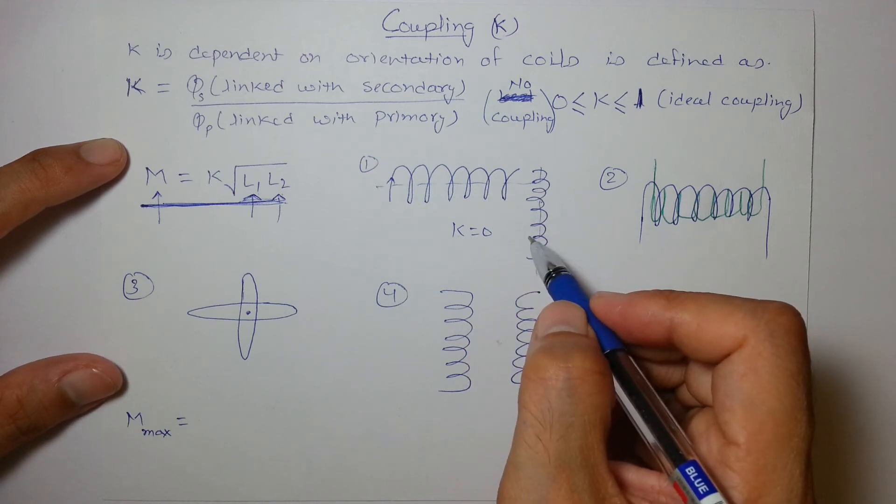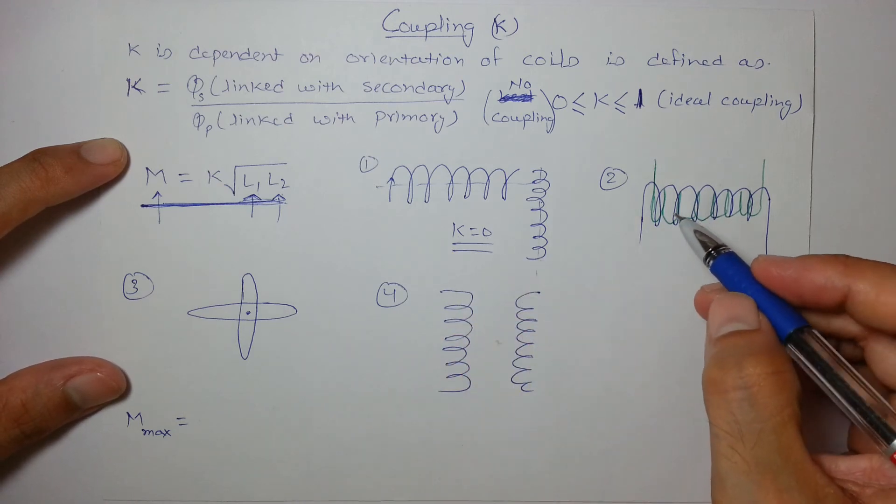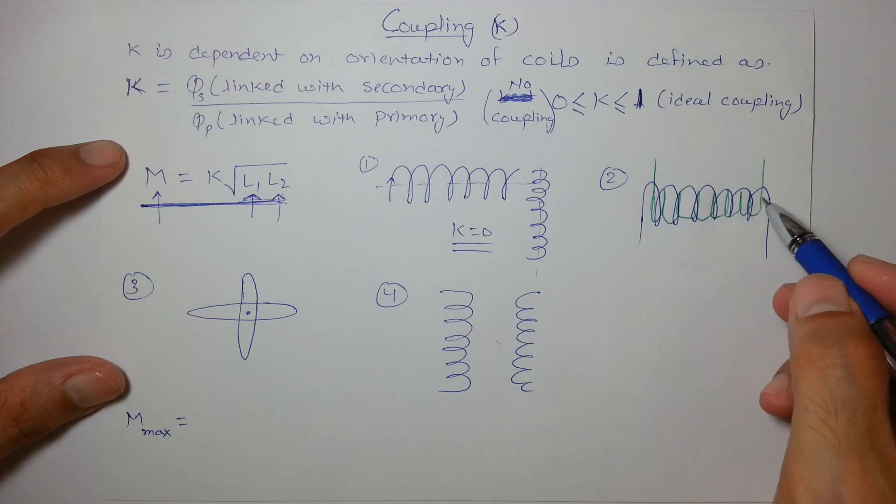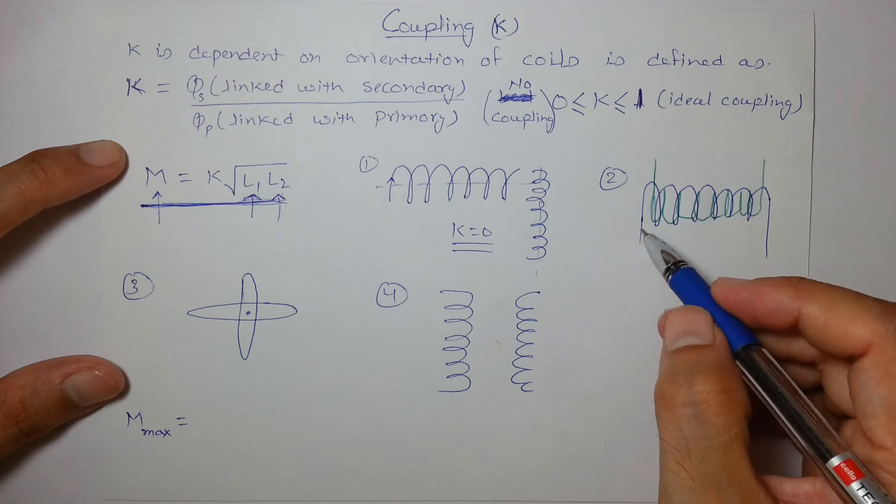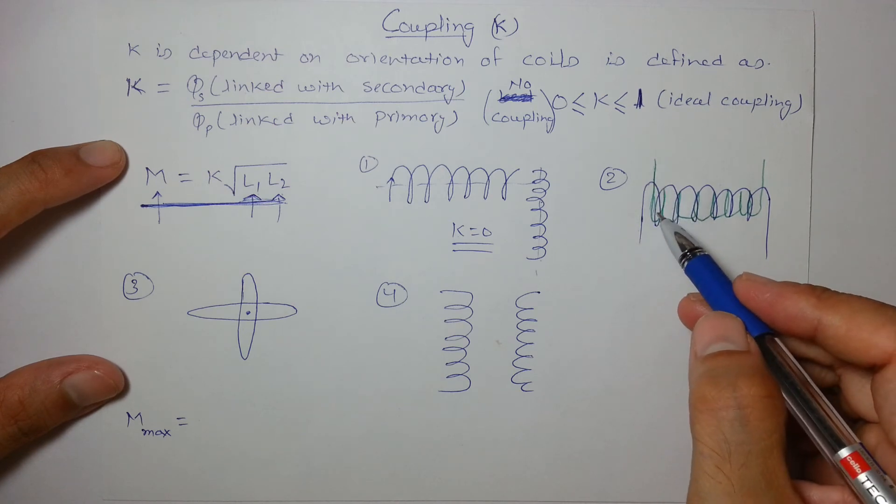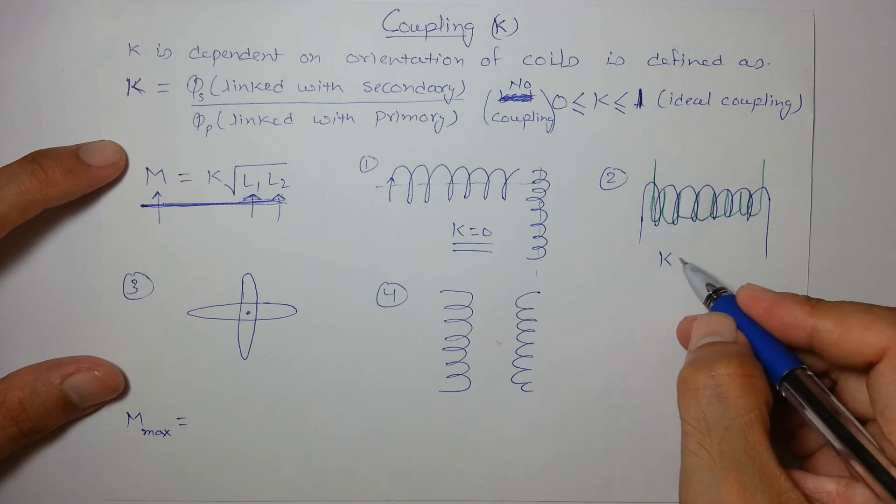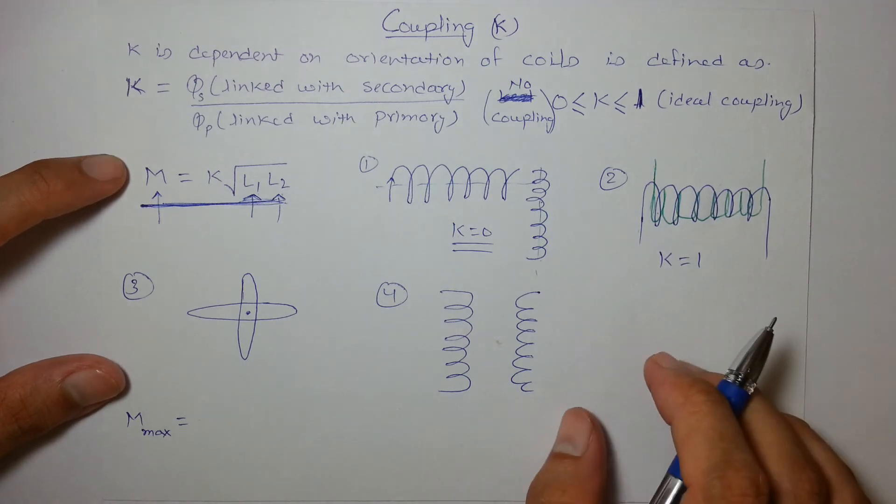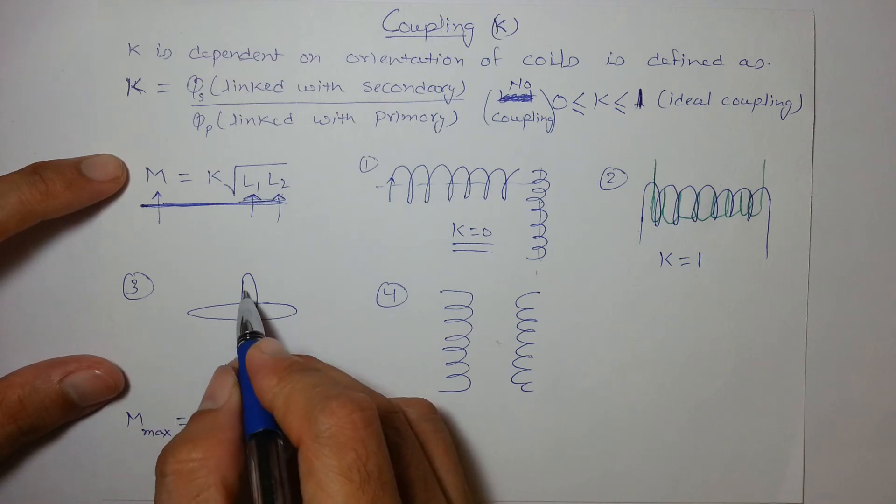And two identical solenoids if they are wrapped around each other, then the amount of flux through 1 will be same as the amount of flux through 2, so we can say coupling coefficient is maximum which is 1. Again in this, these two coils are mutually perpendicular.